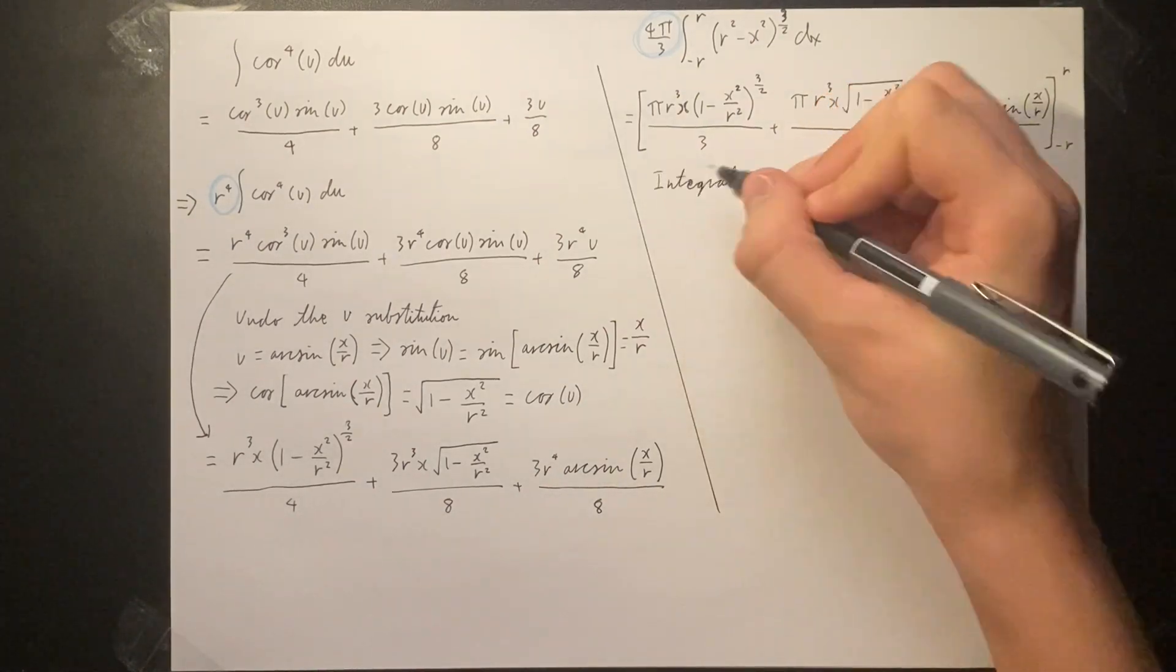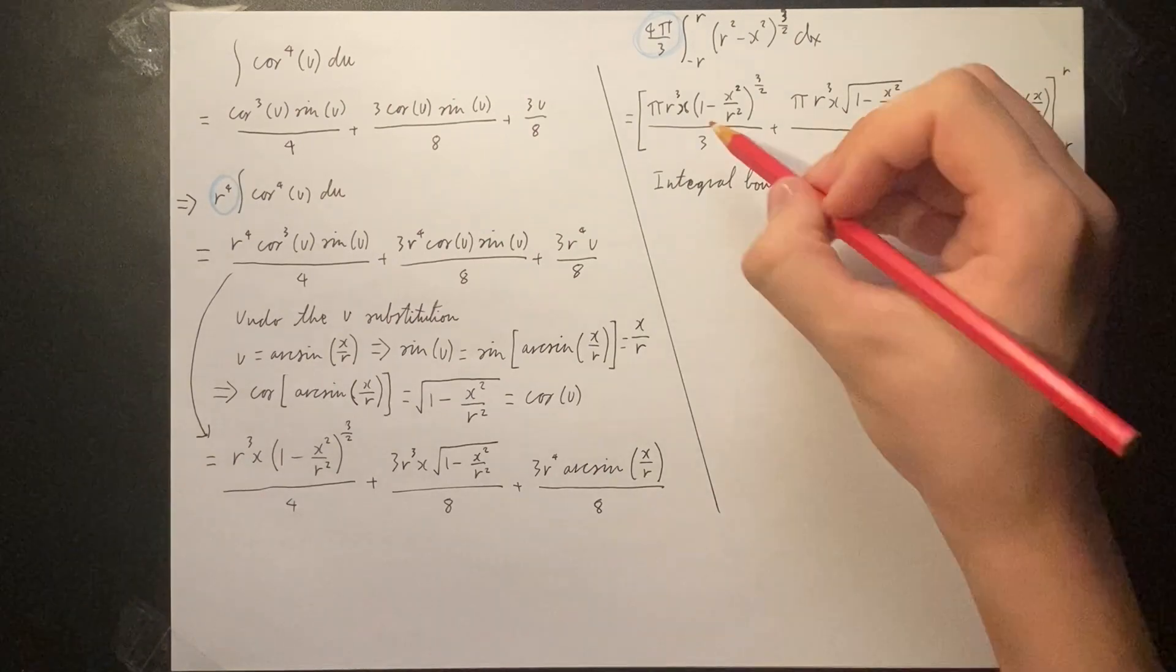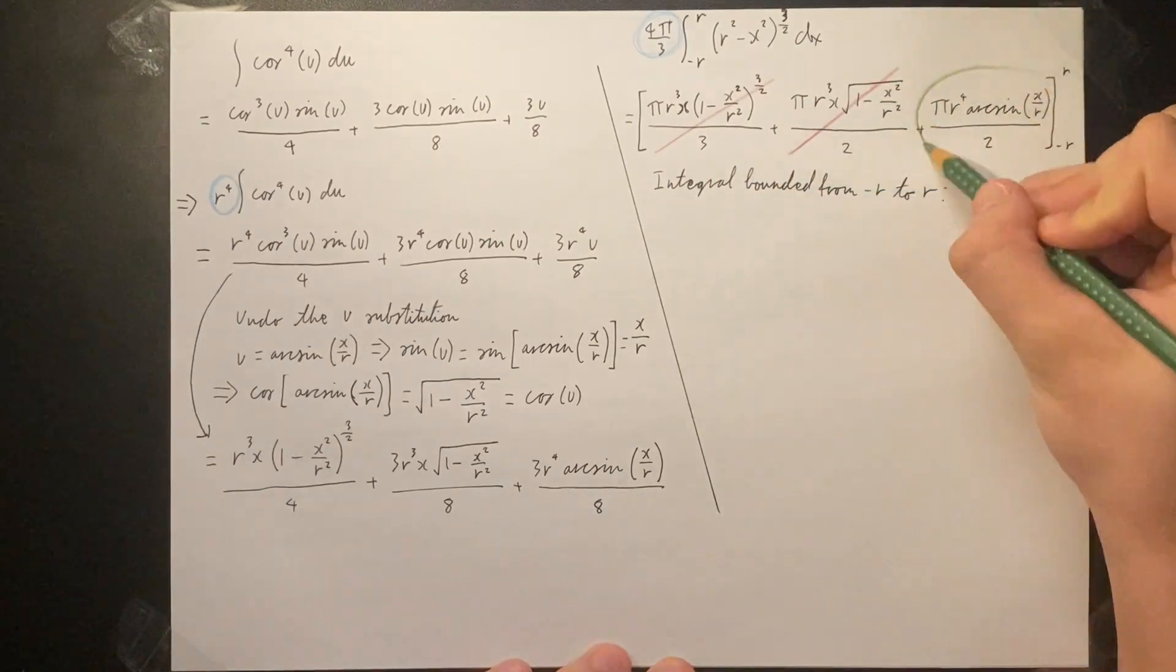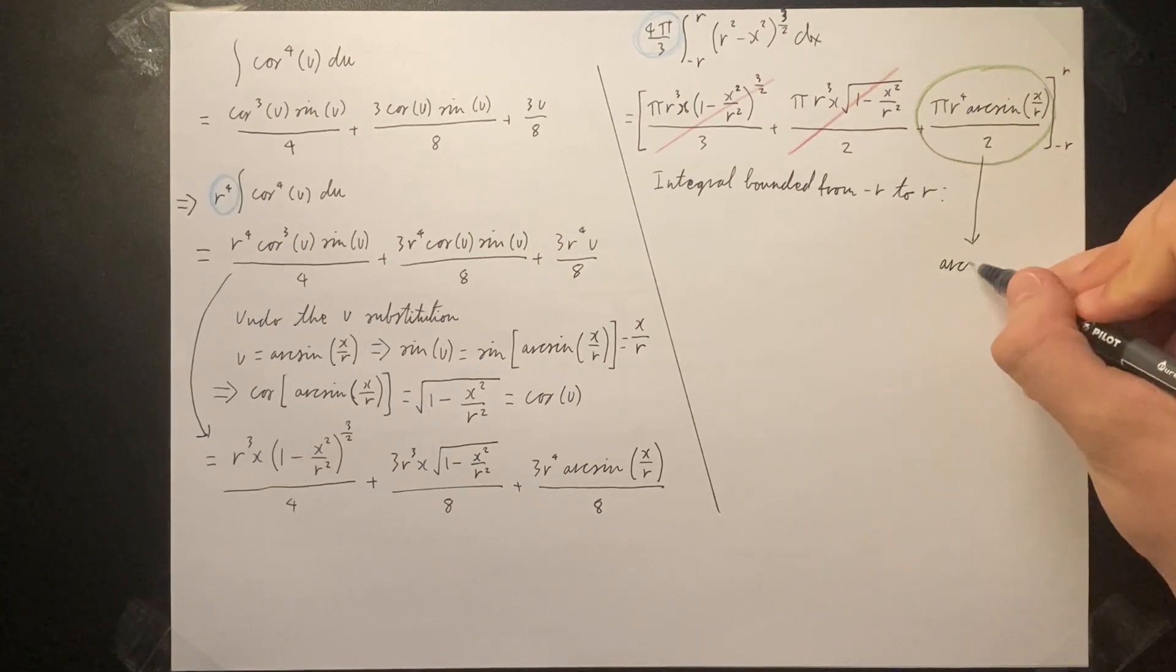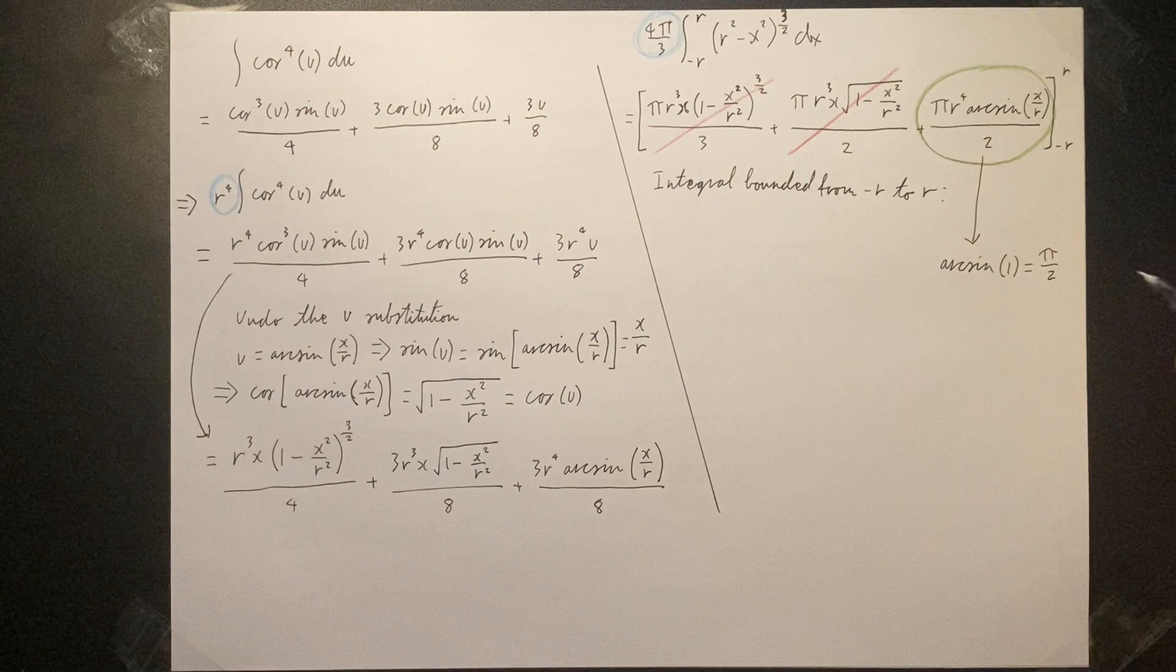We realize that in our substitution, negative or positive r will result in zero for the first and second terms and so they can be ignored. For the last term, the substitution of positive r into arc sine of x over r results in arc sine of 1, which is equal to pi over 2.